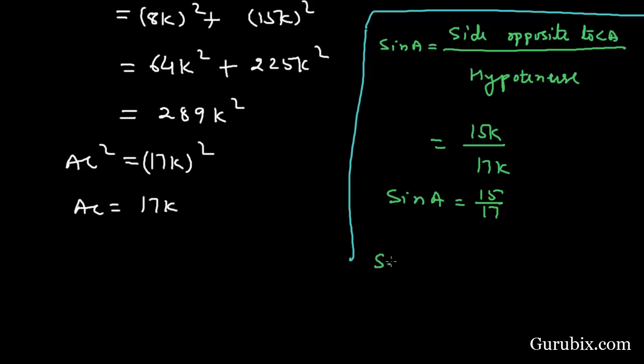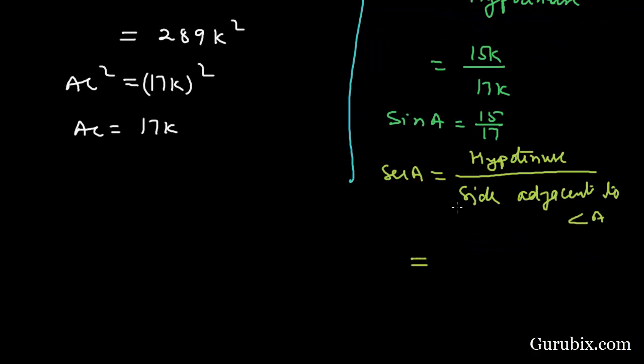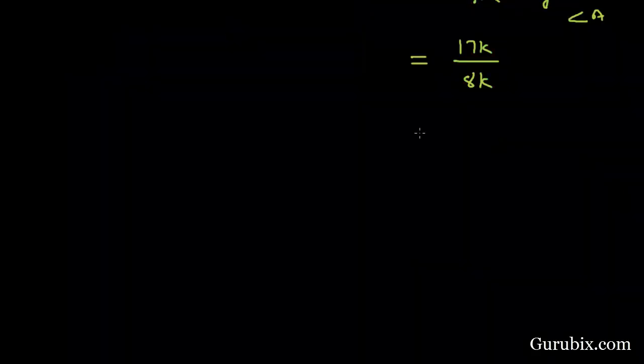Now we shall find sec A. That will be equals to hypotenuse over side adjacent to angle A. So hypotenuse is 17k, side adjacent to angle A is 8k, and so here we have 17 over 8. Therefore sec A is equal to 17 over 8. This is the solution of the question, thank you.